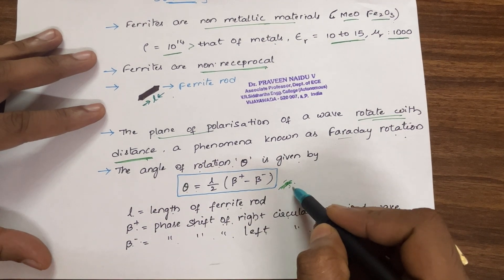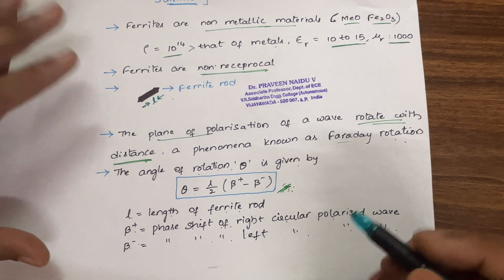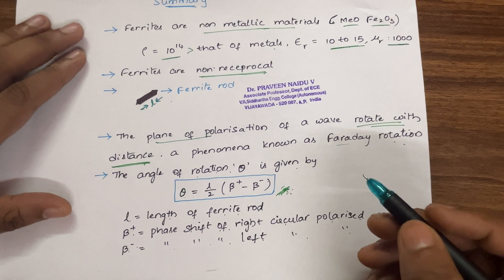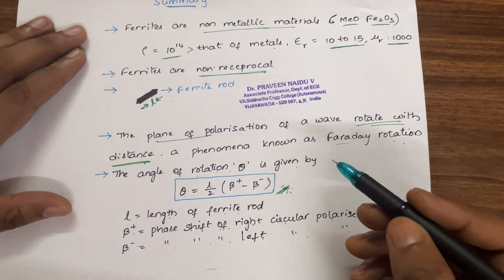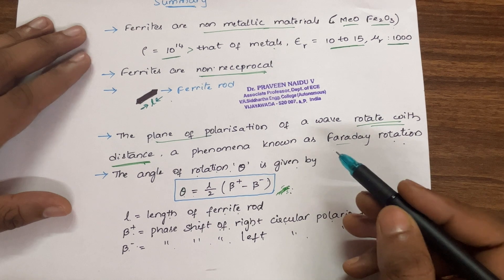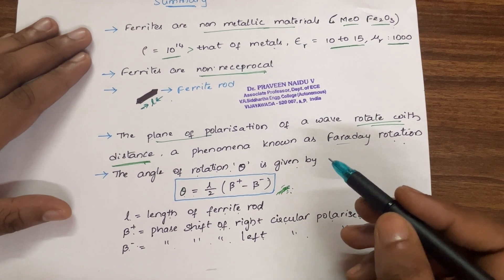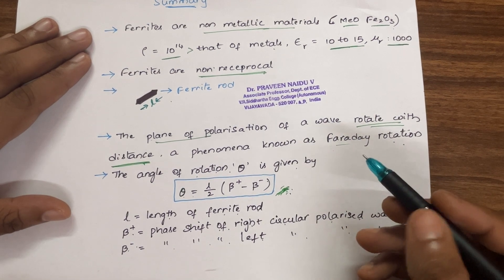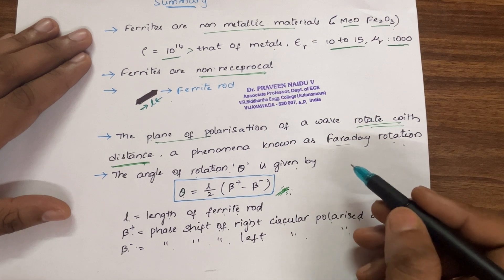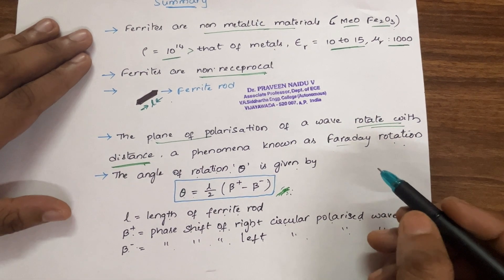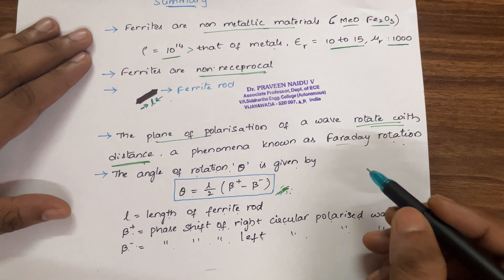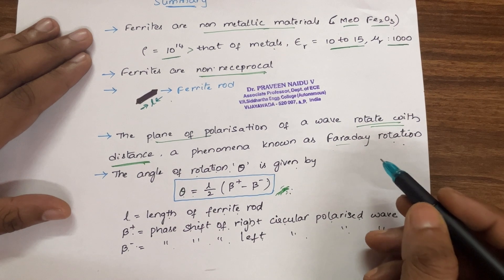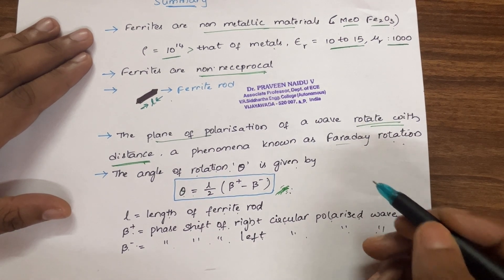This covers the basic properties of ferrite materials, Faraday rotation, the advantages of ferrite materials, and the direction of wave rotation when moving left to right or right to left. In the next class, we will discuss the working principle, advantages, and applications of the gyrator in detail. Thank you, have a nice day.